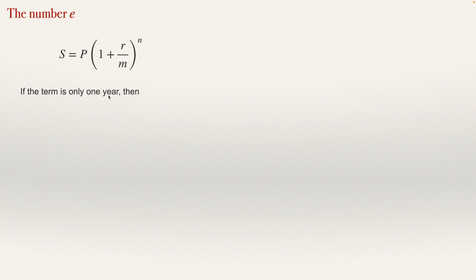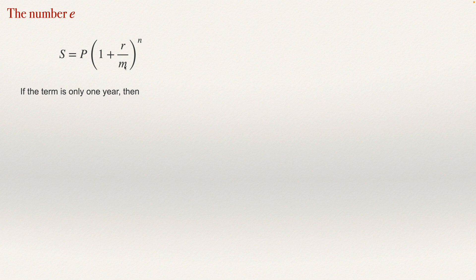If the term is only one year, then these two numbers will be the same. So the number of compound periods per year will be the same as the total number of compound periods. In this case we can use n for both, so the future value will be the principal multiplied by 1 plus r over n to the power n in one year.